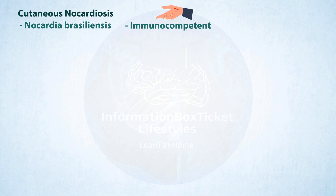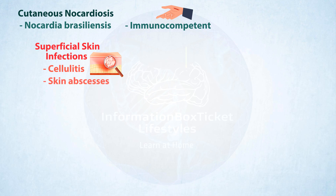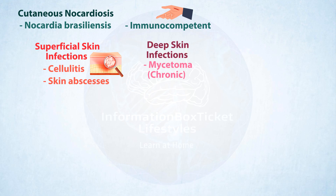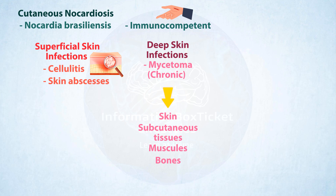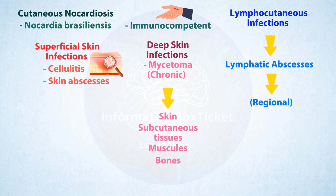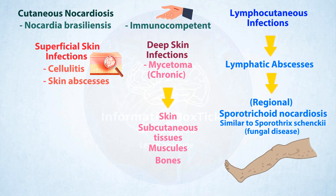Cutaneous nocardiosis manifests in three clinical presentations. Firstly, as a superficial skin infection that may escalate to cellulitis or the inflammation of subcutaneous tissue, accompanied by the formation of skin abscesses. Secondly, it presents as deep skin infections, notably mycetomas, characterized by their chronic nature and progressive destruction, affecting the skin, subcutaneous tissues, muscles, and potentially extending to the bone. And lastly, there's lymphocutaneous infection, wherein the bacteria disseminates to lymphatic vessels, potentially leading to lymphatic abscesses. When regional lymph nodes are afflicted, lymphocutaneous nocardiosis is referred to as sporotrichoid nocardiosis due to its similarities to Sporothrix schenckii, a fungal illness.